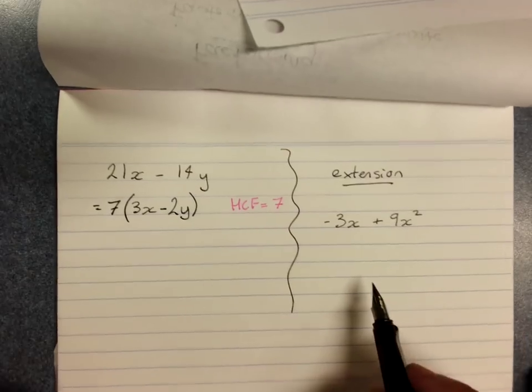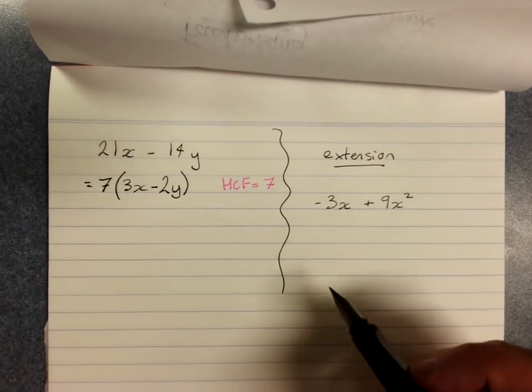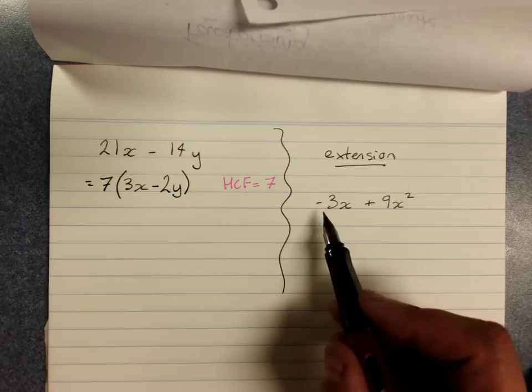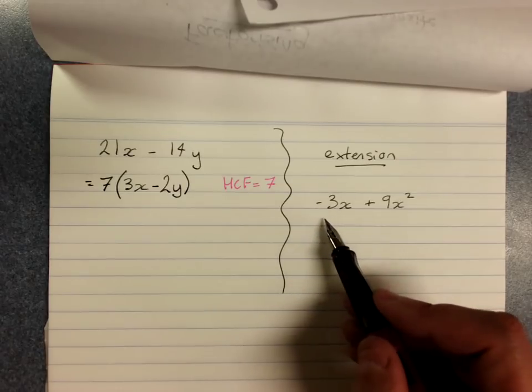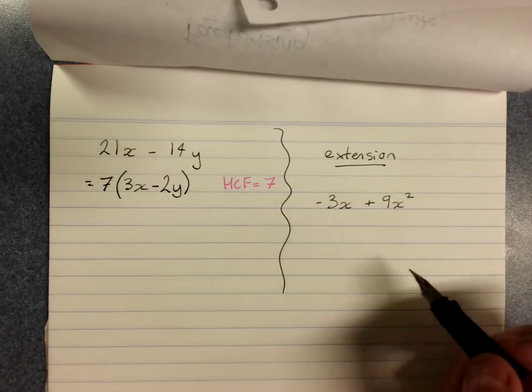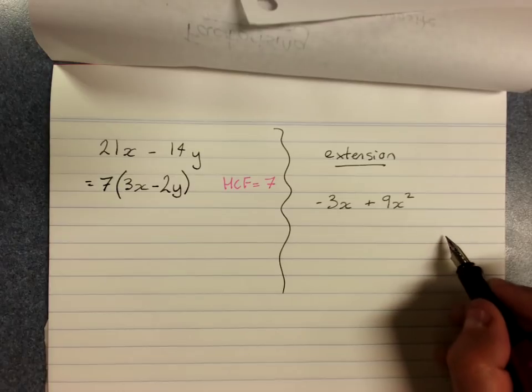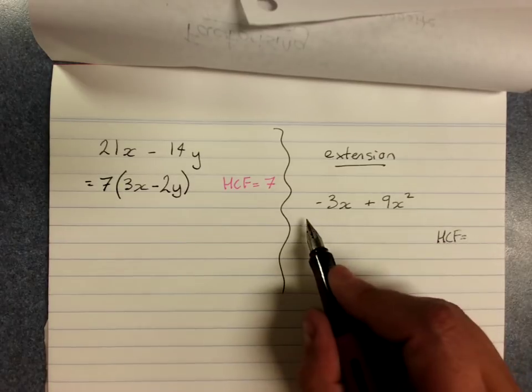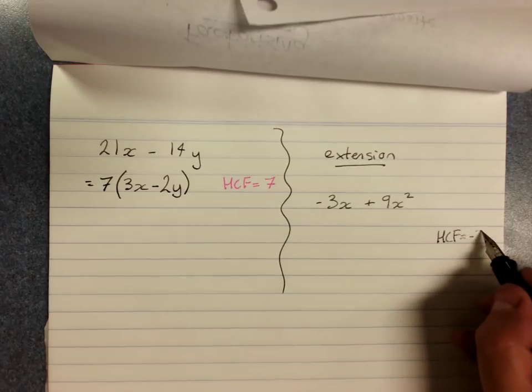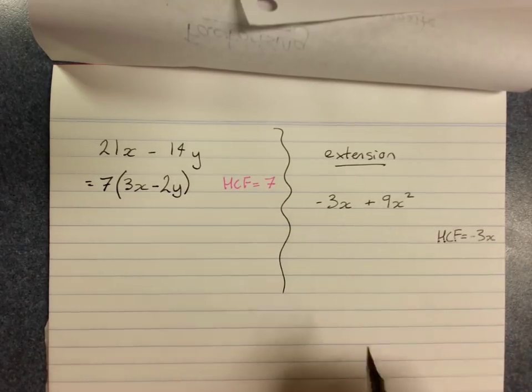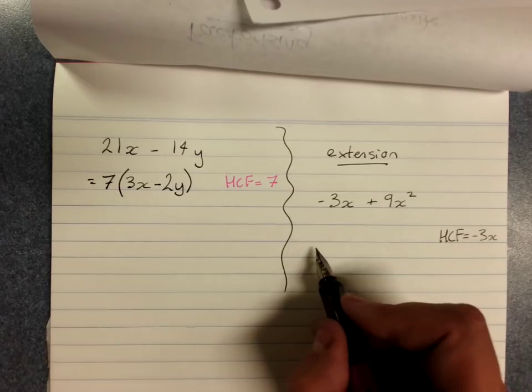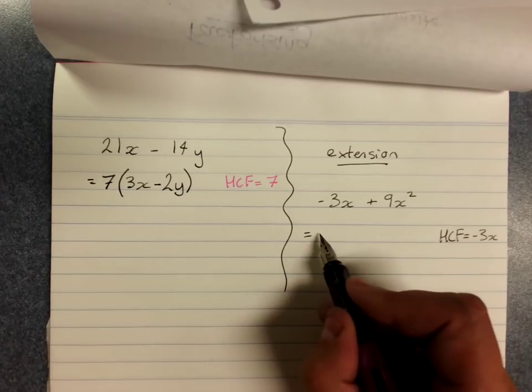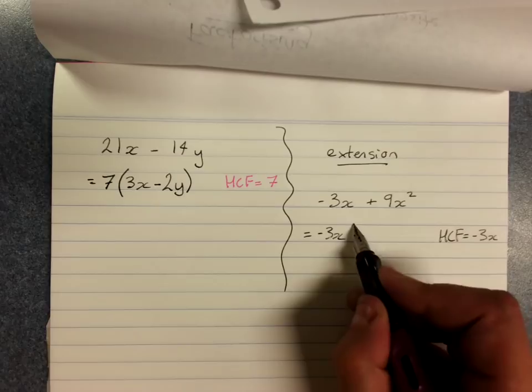Optional extension if you want. I don't need this for a C grade. If your first term is negative, it is best to take out a negative HCF. Negative 3x goes into both of these terms.